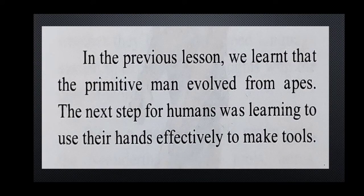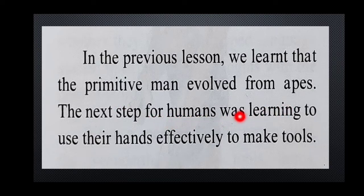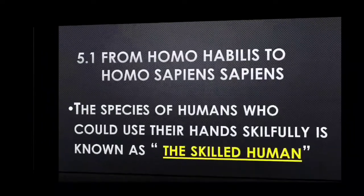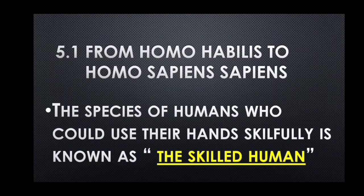In the previous lesson, we learned that the primitive men evolved from apes. The next step for humans was learning to use their hands effectively to make tools. Let us start with 5.1: From Homo habilis to Homo sapiens sapiens.